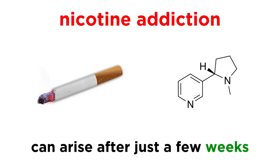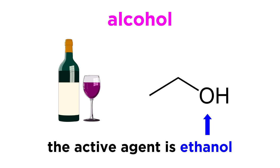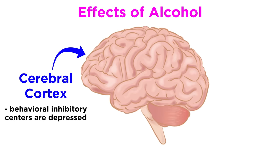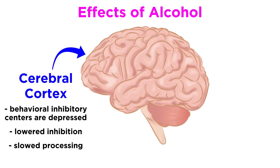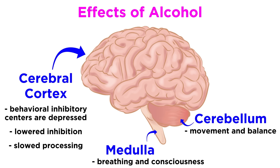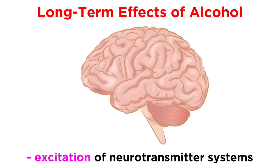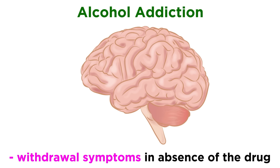Nicotine addiction can arise very quickly, even after just a few weeks of regular use. In alcoholic beverages, the active agent is ethanol. This interacts with the brain in a variety of ways. In the cerebral cortex, behavioral inhibitory centers are depressed, which lowers behavioral inhibition and processing of information slows down. It affects the center of movement and balance in the cerebellum, as well as the medulla, which impacts breathing and consciousness. Long-term alcohol exposure causes neurological changes resulting in tolerance, which then causes excitation of certain neurotransmitter systems, as well as withdrawal symptoms in the absence of the drug.